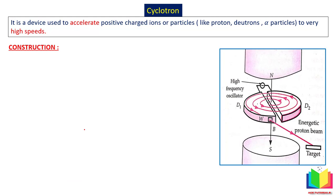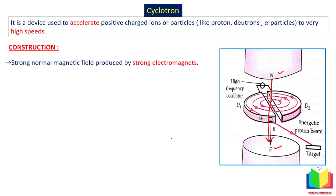Now let us discuss the construction of the cyclotron in detail. In a cyclotron, there is a magnetic field and an electric field. For the magnetic field, we need a pair of strong electromagnets — one north pole and one south pole. The direction of magnetic field will be from north to south pole. A strong uniform magnetic field is produced by strong electromagnets. The particle velocity must always be perpendicular to this magnetic field — that is why we use the term 'normal magnetic field.'